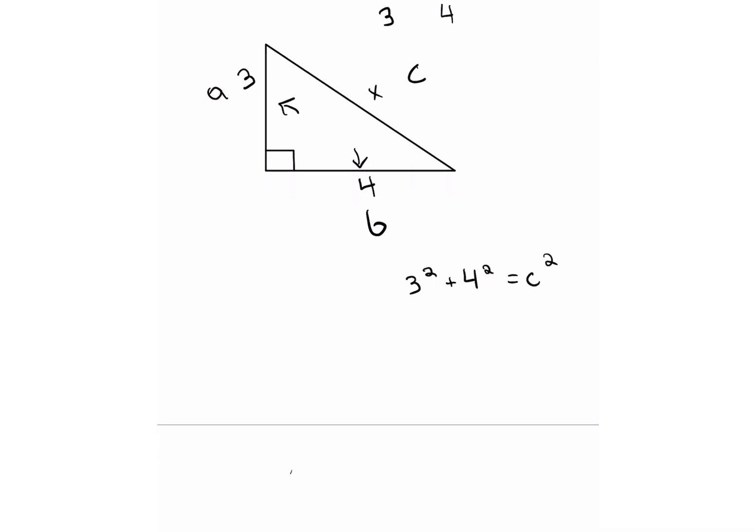Now we just solve for this by figuring out what each factor is squared. So three squared equals nine plus four squared. Four squared is 16, and that equals C squared. Now we add our factors, so nine plus 16 equals 25. So 25 equals C squared.